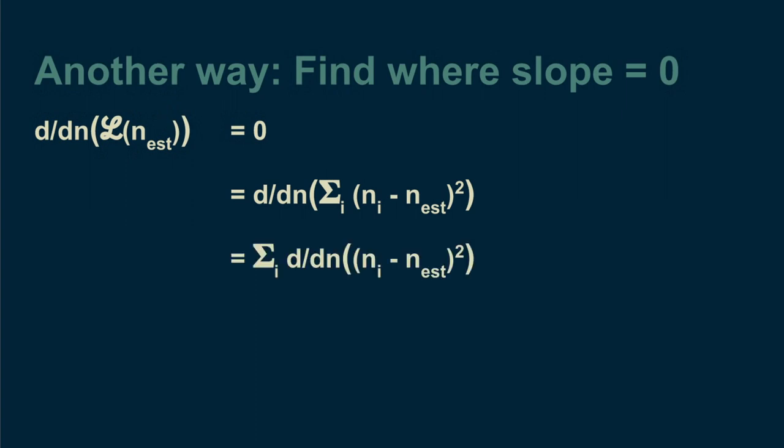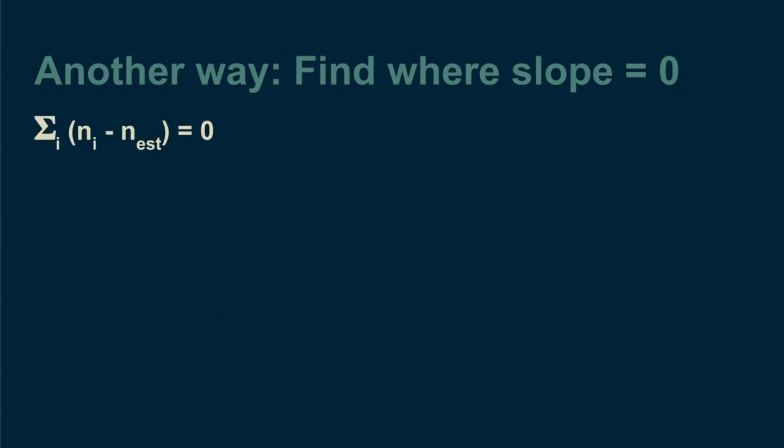We take advantage of the fact that the derivative of a sum is the sum of the derivatives of all its parts. Then we can take the derivative of each part. The exponent 2 comes down in front. Because the whole expression is already equal to zero, we can divide both sides by two. Then what's left is still equal to zero. And we can break out the sum into its pieces.